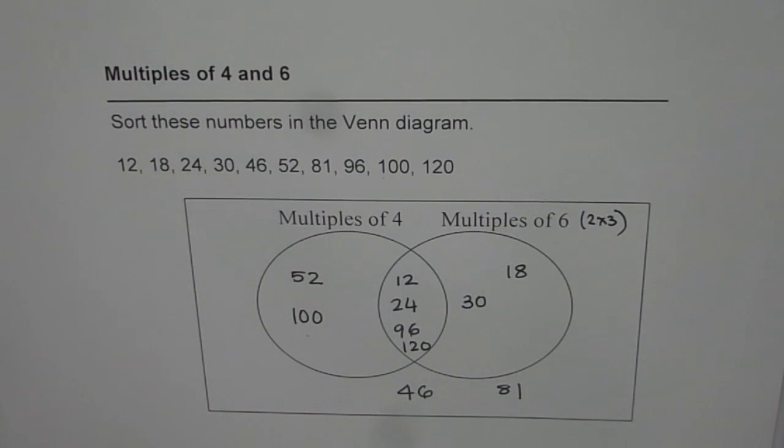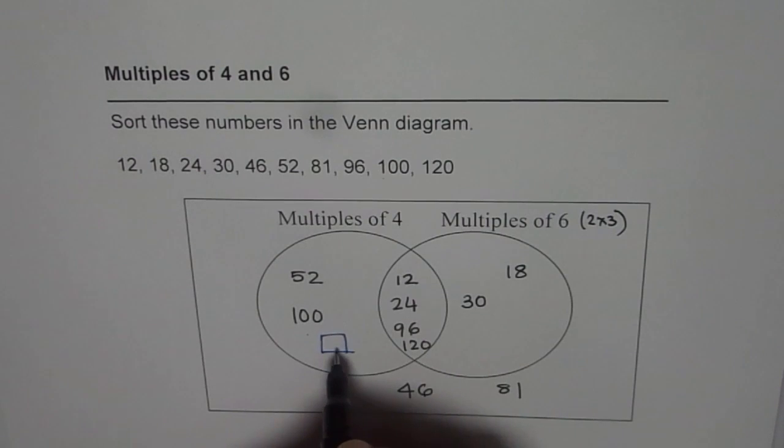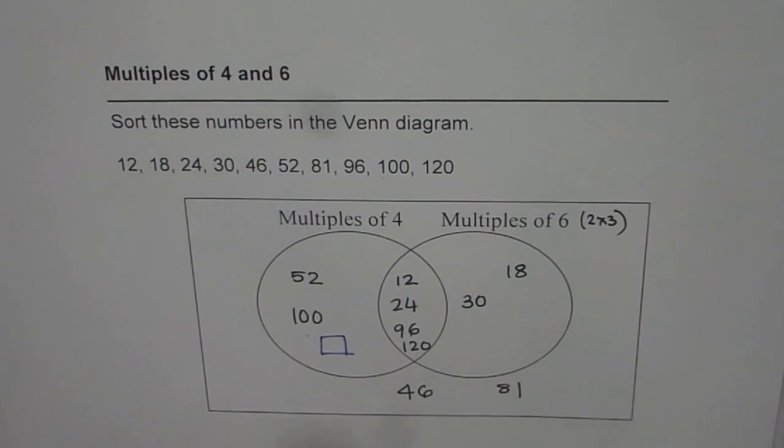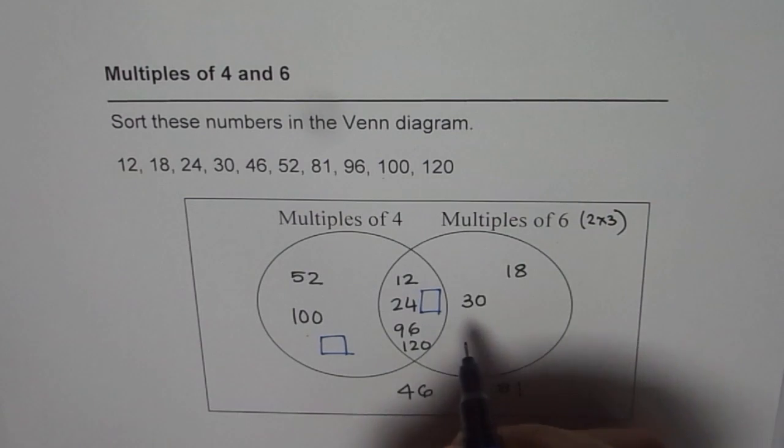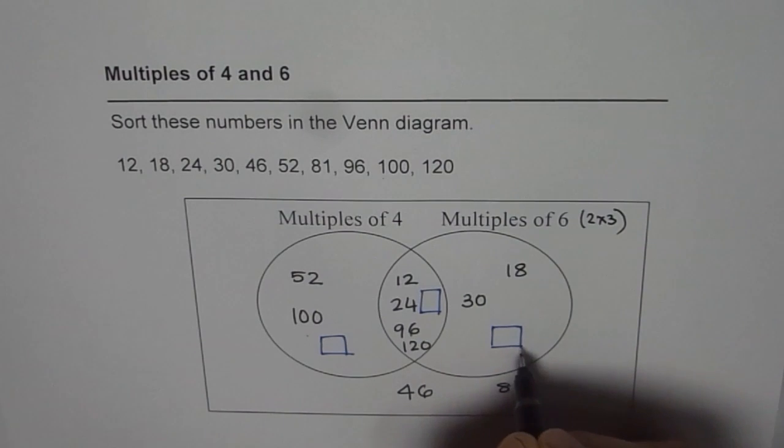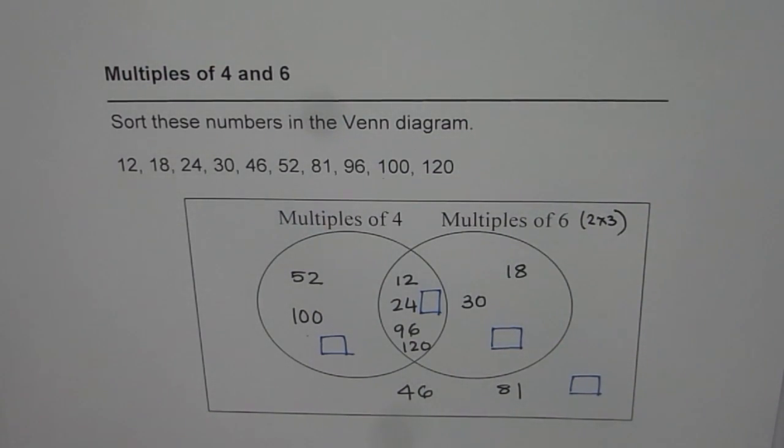So that is how we can place all these multiples. Now, as an exercise, I would like you to place one number here—a number which is a multiple of 4 but not of 6. A number here—a number which is a multiple of 6 but not of 4. And a number outside which is not a multiple of 4 or 6. So that is your exercise. I hope that helps. Thank you and all the best.